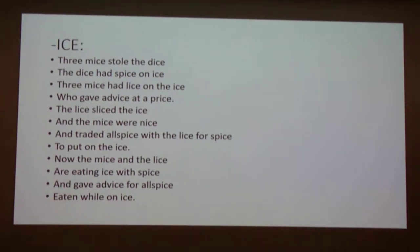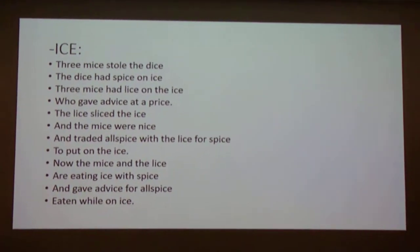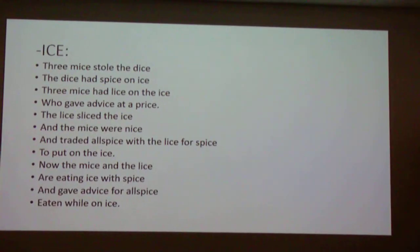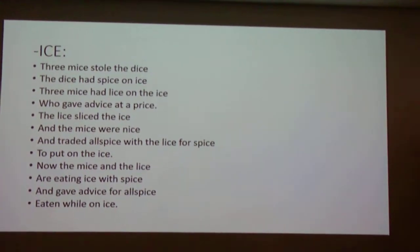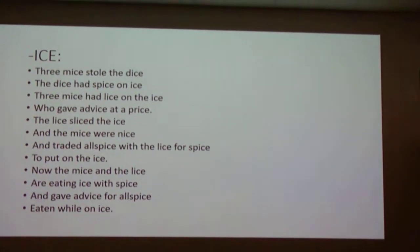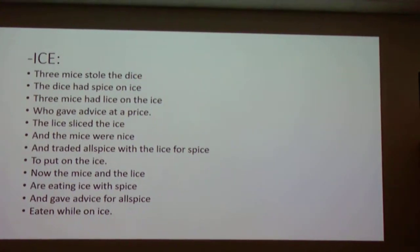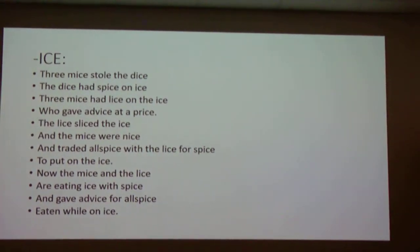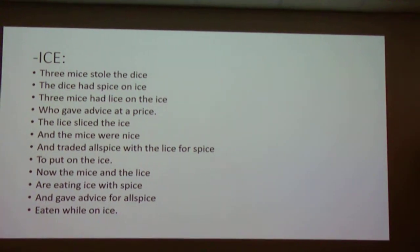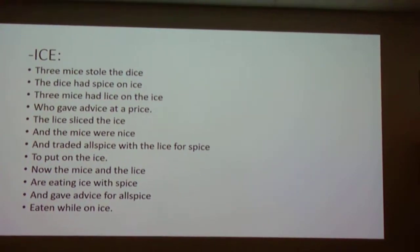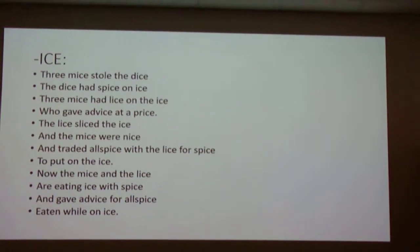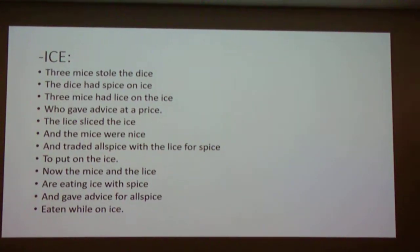Here we have the following with I-C-E at the end. Three mice stole the dice. The dice had spice on ice. Three mice had lice on the ice. Who gave advice at a price? The lice sliced the ice, and the mice were nice. And traded all spice with the lice for spice to put on the ice. Now the mice and the lice are eating ice with spice and gave advice for all spice eaten while on ice.